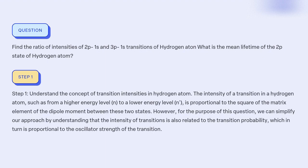Step 1: Understand the concept of transition intensities in the hydrogen atom. The intensity of a transition in a hydrogen atom, such as from a higher energy level n to a lower energy level n, is proportional to the square of the matrix element of the dipole moment between these two states.